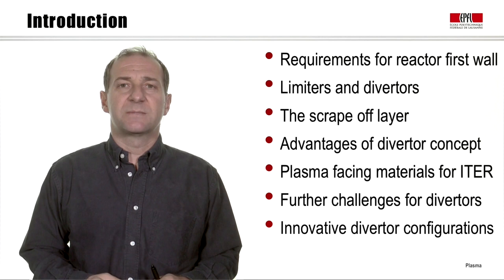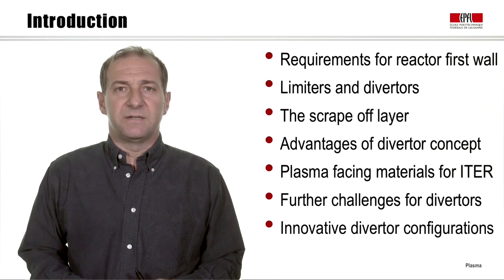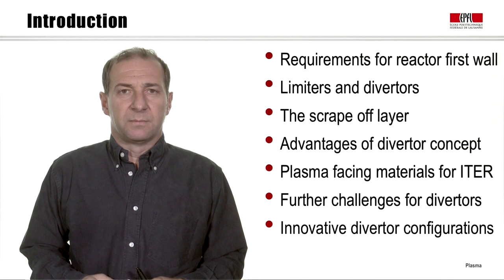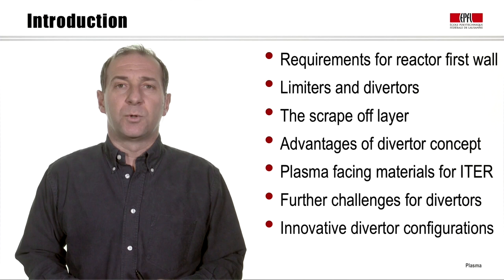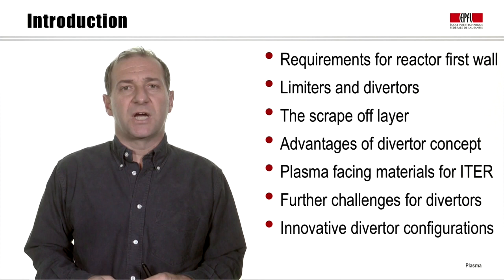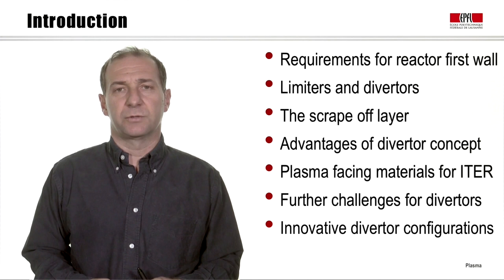Today we will explore the interaction between the plasma and the surrounding walls in the reactor by looking at the requirements of the reactor first wall, the concepts of limiters and diverters, by defining the scrape-off layer and seeing what its characteristics are, by looking at the advantages of the diverter concept, exploring what plasma-facing materials are foreseen for ITER, and illustrating innovative diverter configurations.